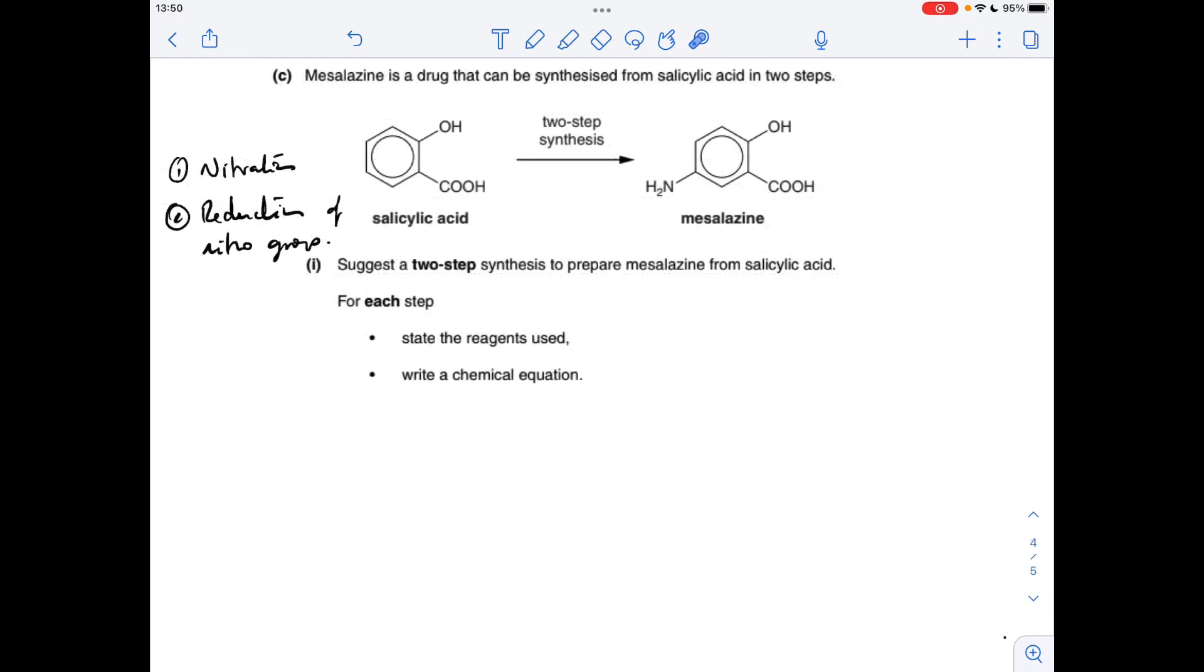And finally part C, there's a two-step synthesis to go from salicylic acid to this compound here, which I can't even say. So the first thing you do is nitrate this, and then you would reduce the nitro group that's obviously going to go onto the ring here, and that would generate the amino group.